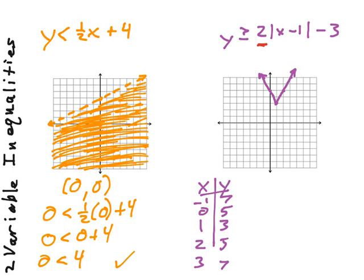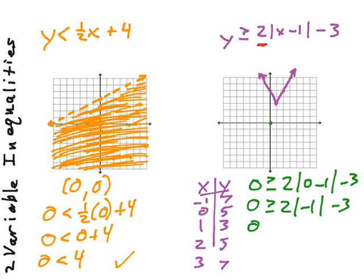So I want to know is zero greater than or equal to 2 times the absolute value of zero minus 1 minus 3. So I get zero greater than or equal to 2 times the absolute value of negative 1 minus 3. That's zero greater than or equal to the absolute value of negative 1 is 1. So we have 2 minus 3 is zero greater than or equal to negative 1. And the answer is, of course, no.